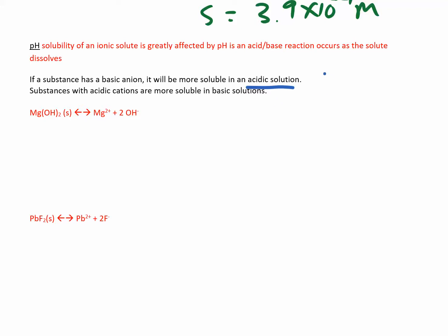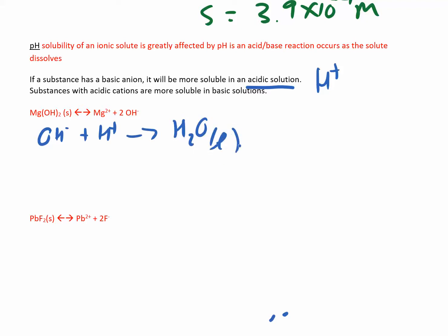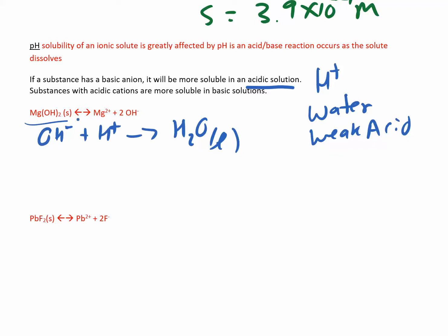The hydroxide (OH⁻) can react with H+ to make water, and water is a liquid — it's going to be very stable. If you make a strong acid, strong acids want to dissociate. But if you make water or a weak acid, then we say the solid is more soluble under acidic conditions.